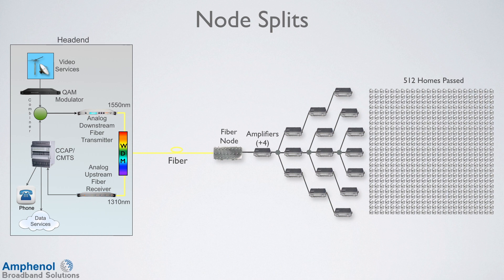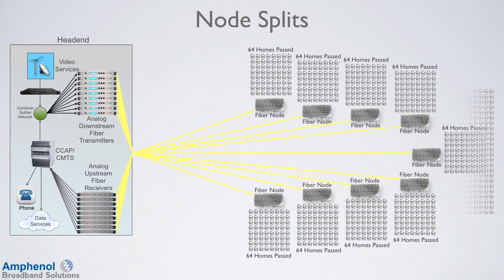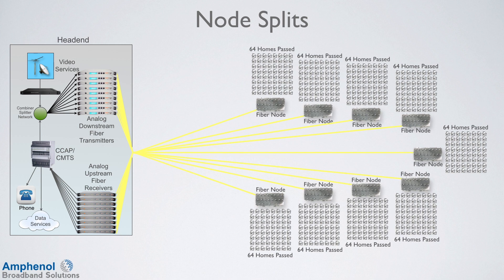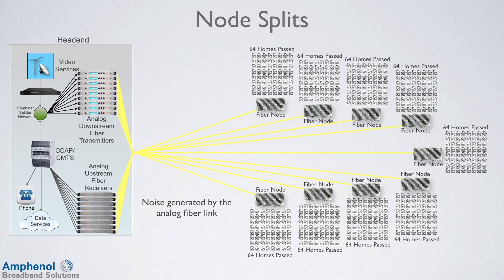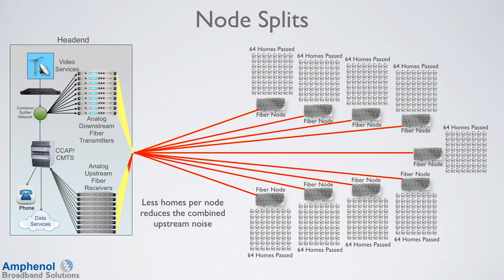One way to help overcome these challenges is to do node splits. This reduces the number of homes served per node, and now there are fewer users sharing the data. In this example, we have a Node Plus Zero architecture, which means that after the node, it's an all-passive network. Since we eliminated the amplifier cascade, the noise of the system is reduced, which helps improve the DOCSIS 3.1 signals — but we still have the noise generated by the analog fiber link. One advantage of fewer homes per node is that the combined upstream noise is reduced.